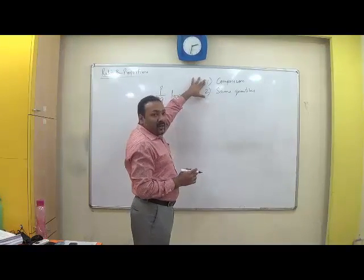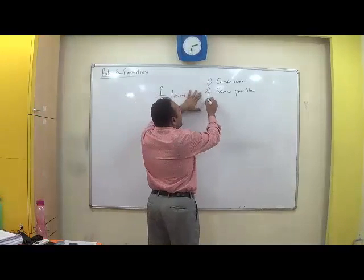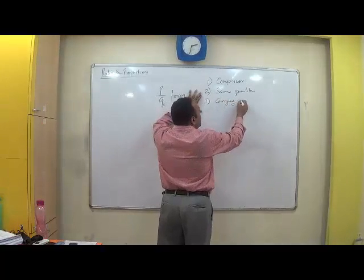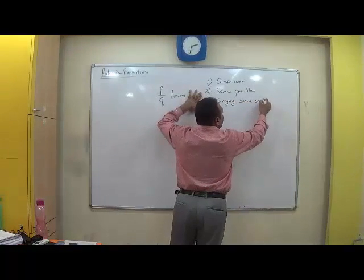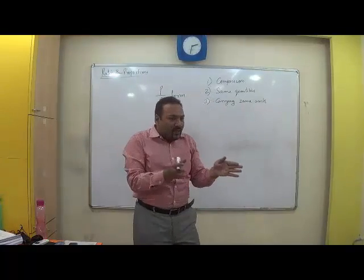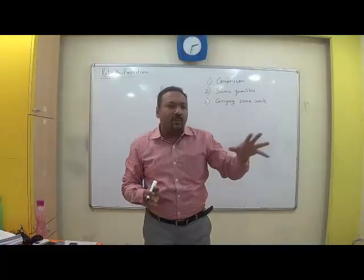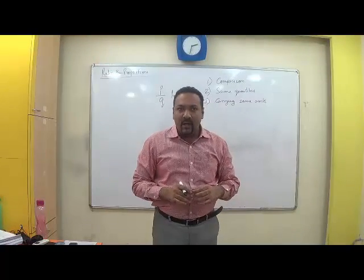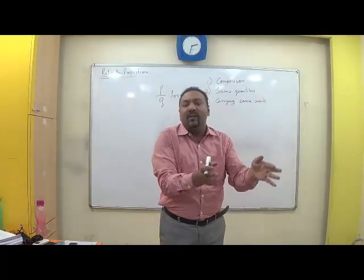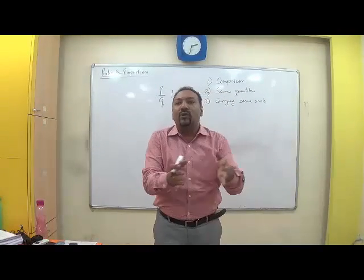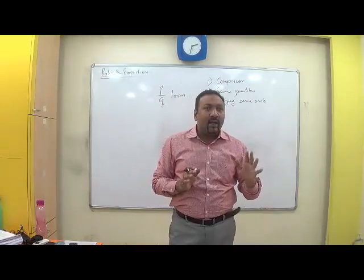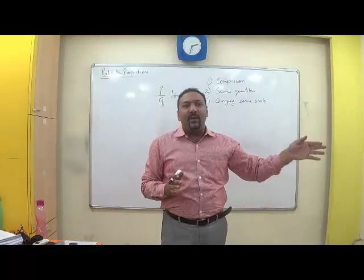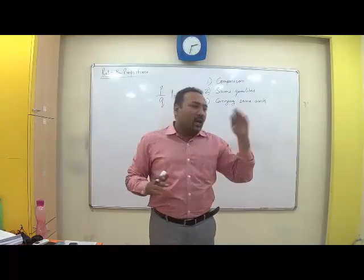So this is a comparison between same quantities, and another important aspect is carrying same units. So if you are comparing speed, you cannot compare the speed of a bicycle with the speed of a rocket. You can possibly compare the speed of a bicycle with a scooter, or the speed of a scooter with a car. Beyond that, if their units are different, you cannot compare. So meter per second, kilometer per hour.